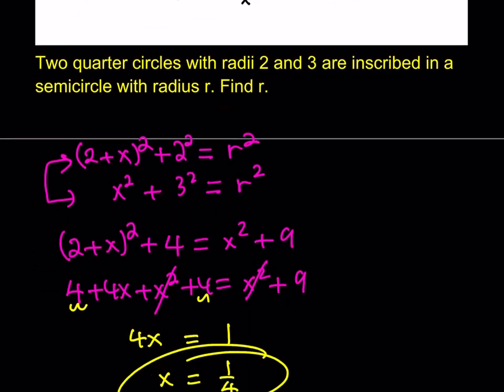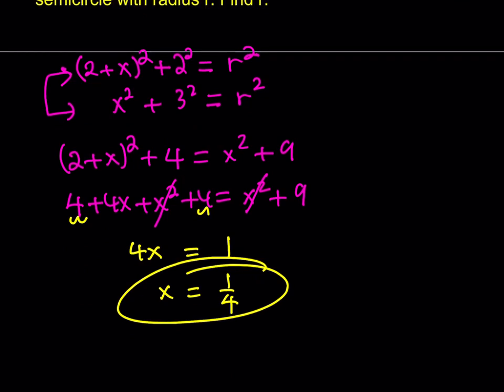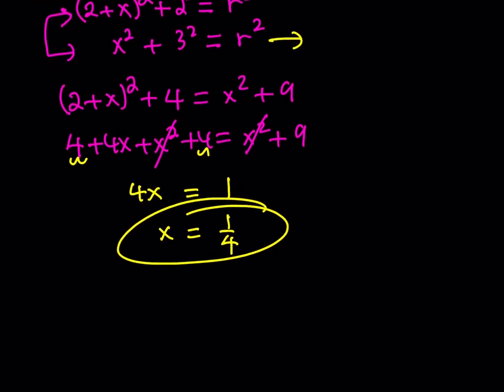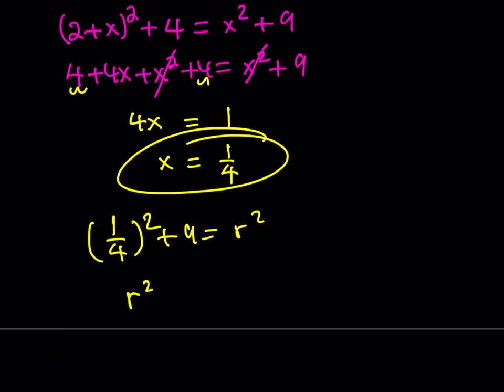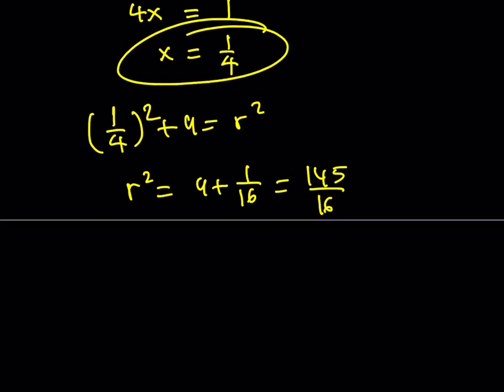So what am I going to do now? I got the value of x. So I can go ahead, and the second equation seems to be simpler. So let's go ahead and substitute x over there. 1 over 4 squared plus 9 is equal to r squared. So from here r squared is equal to 9 plus 1 over 16 which is equal to 9 times 16 plus 1 which is equal to 145 over 16. Now if you go ahead and square root both sides you're going to be getting the square root of 145 divided by 4 for the radius.